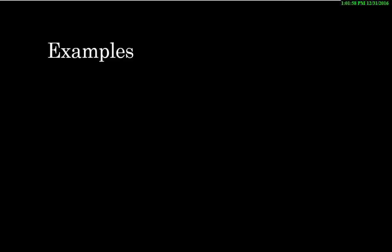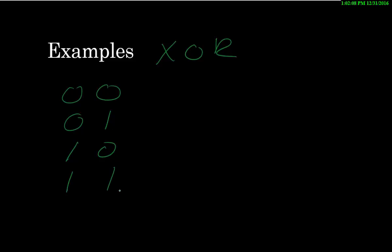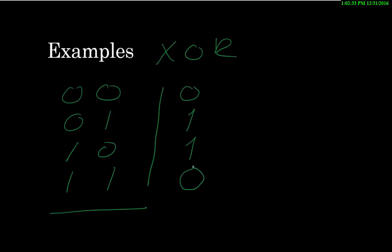The next one is exclusive OR, or XOR. Here are all the combinations of two bits. Exclusive OR is where only one or the other can be set, but not both. So XOR of zero and zero is zero; one and zero is one; zero and one is one; but one and one is zero — because both are set. Exclusive OR means one or the other, but not both.